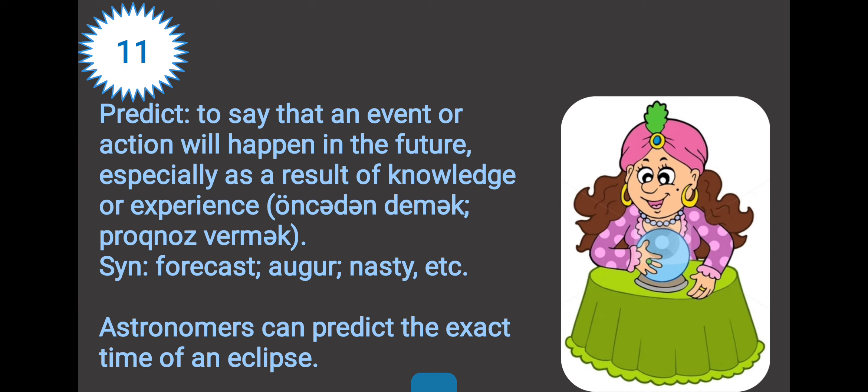Word eleven: predict. Predict means to say that an event or action will happen in the future, especially as a result of knowledge or experience. Its meaning in Azerbaijani is 'öncədən demək', 'proqnoz vermək', 'falçılıq etmək'. The synonyms of this word are forecast, foretell, etc. For example: astronomers can predict the exact time of an eclipse.